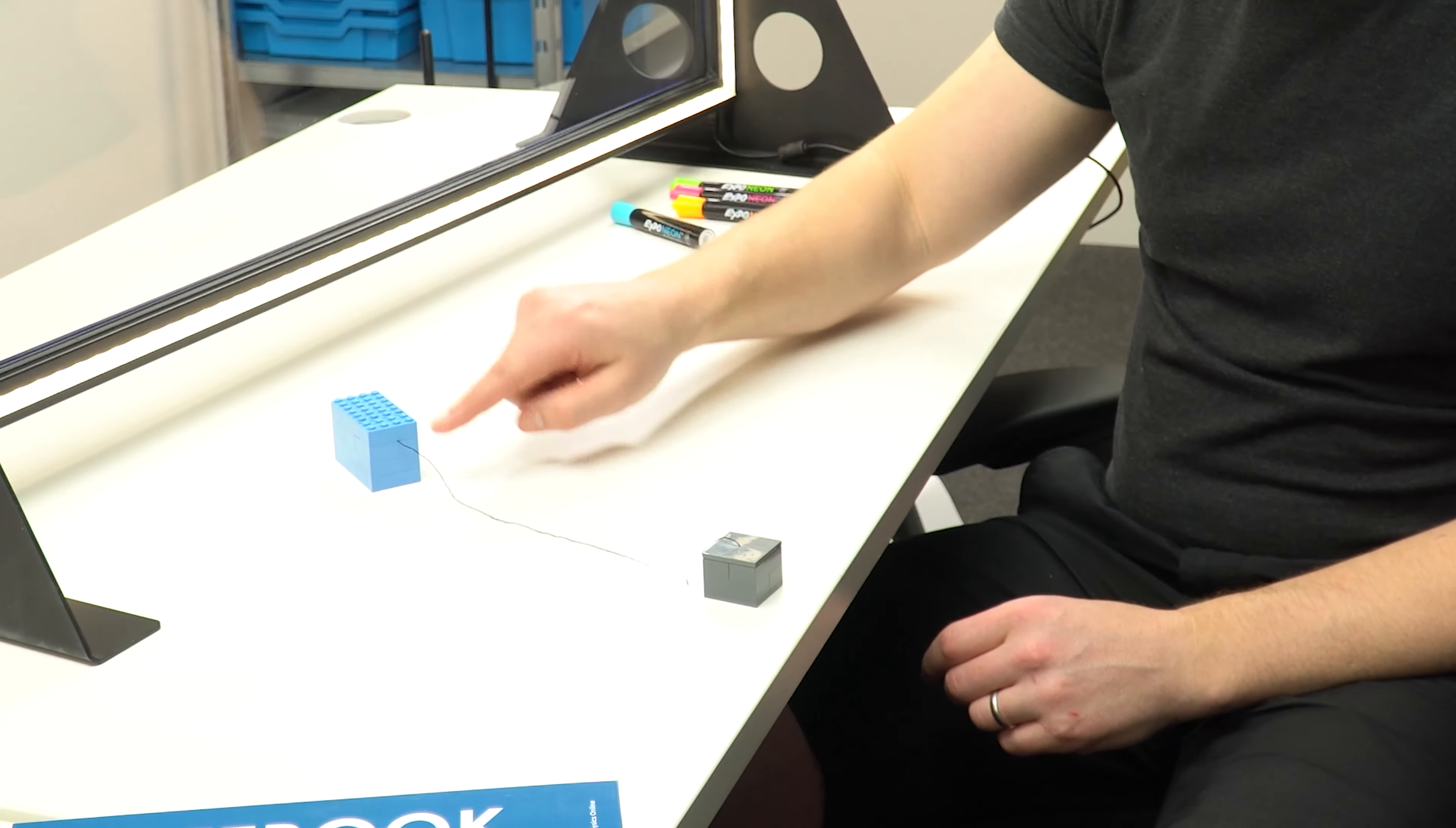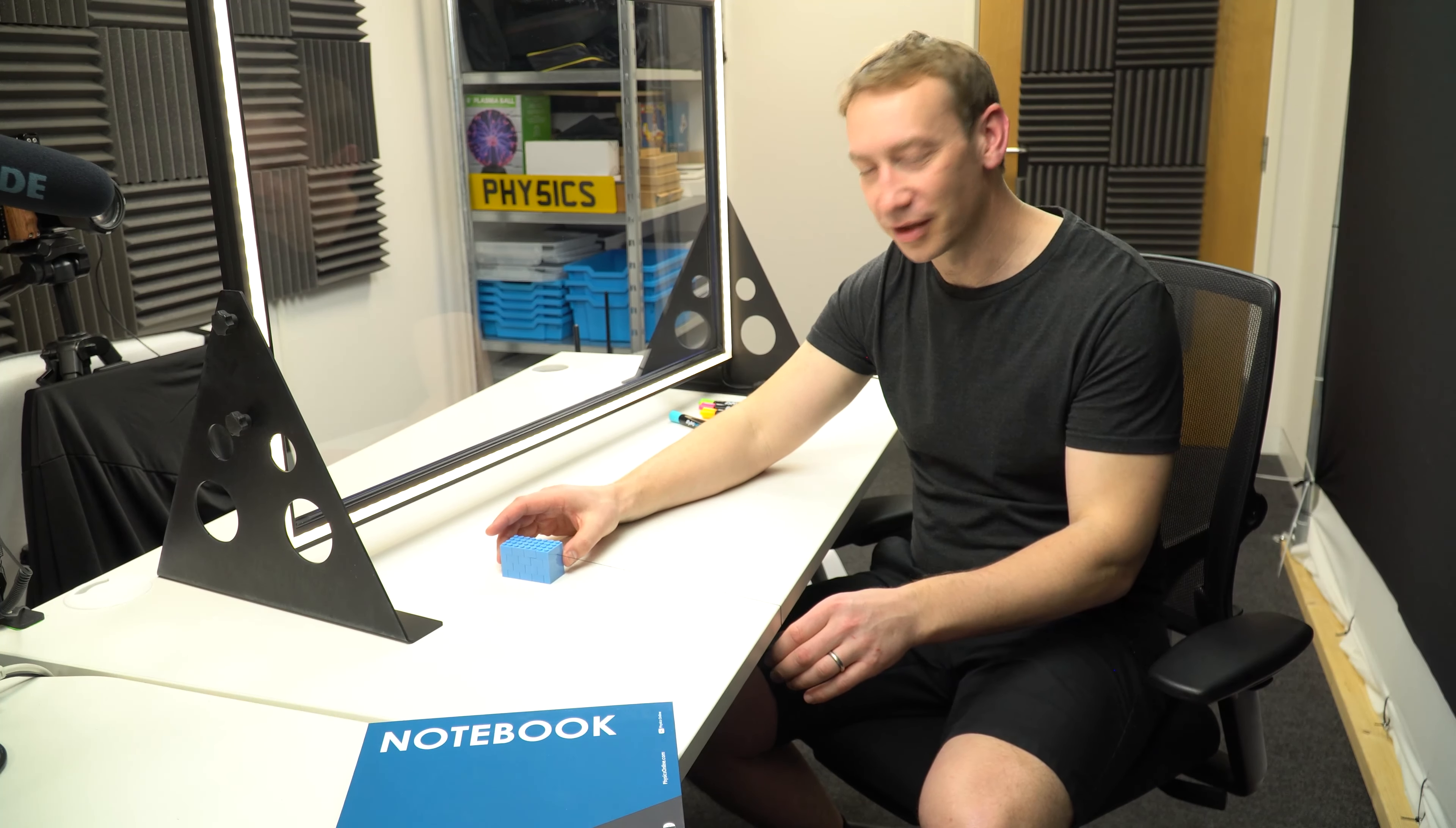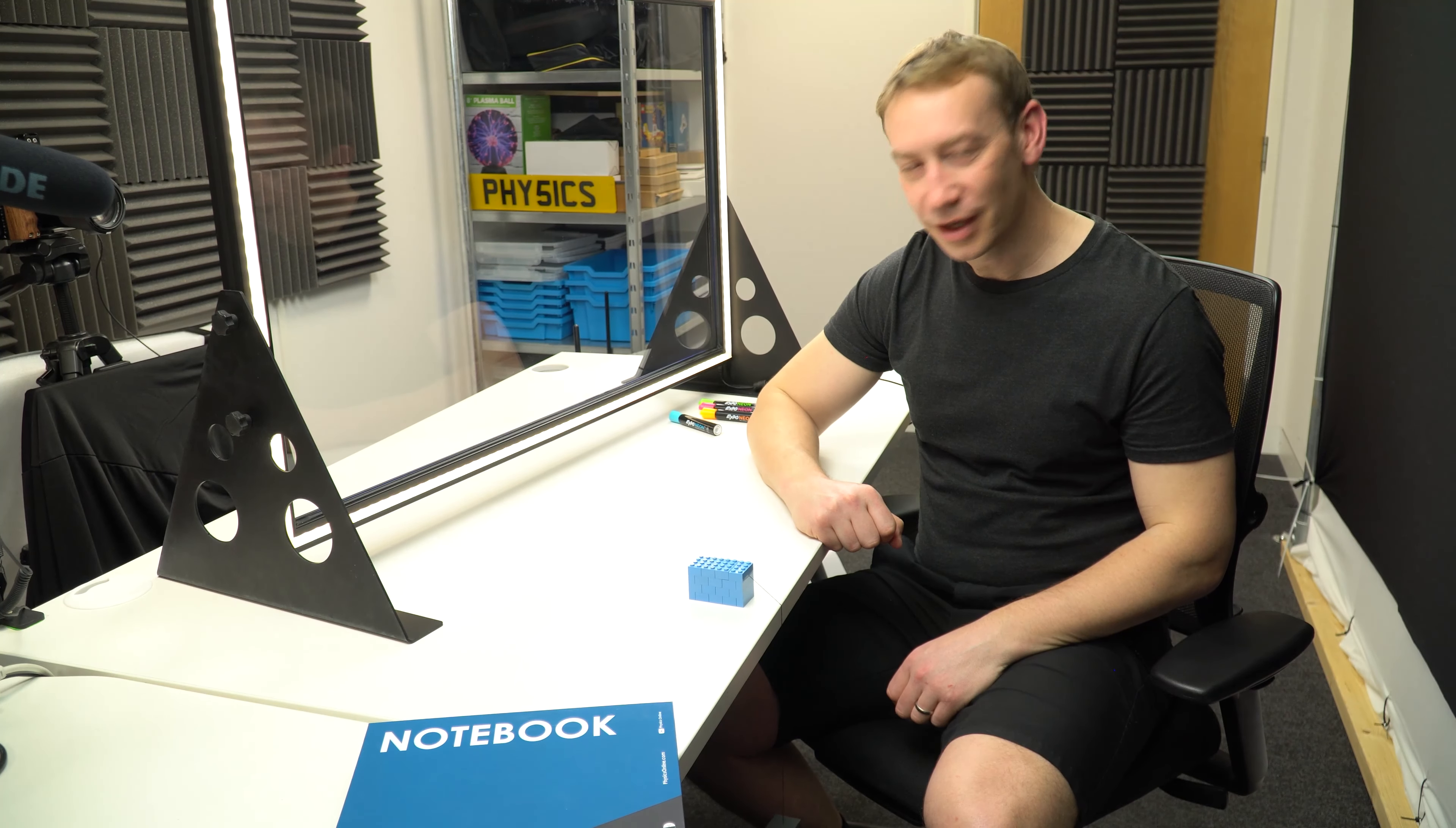I have a block made out of Lego connected with a thread to this other piece of Lego which is going to hang over the edge of the desk. And when I let it go, it moves and then stops.